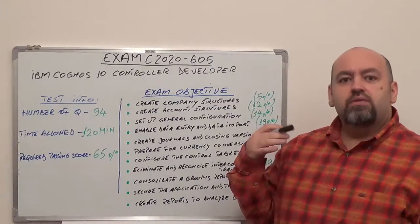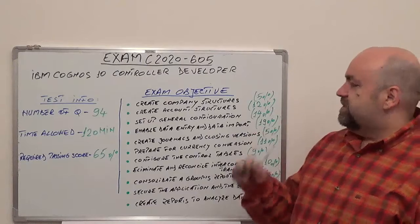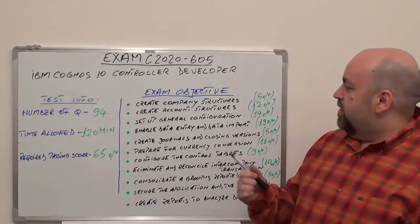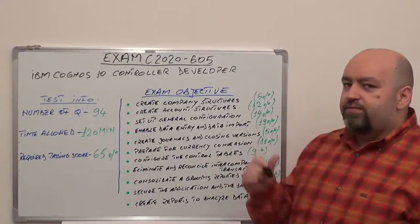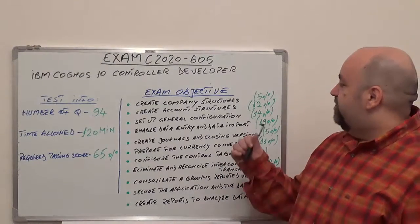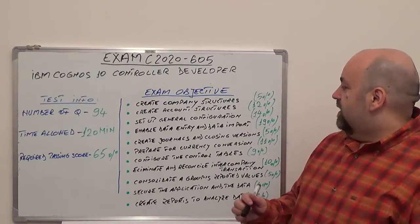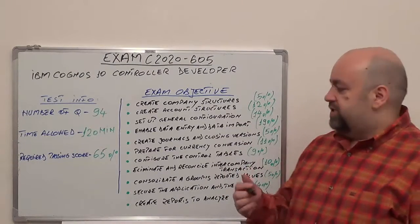First, let's start with the first one. Create company structure with 5% of total questions. Create account structure with 12% of the questions. Set up general configuration at 14% of total questions. Enable data entry and data import with 19% of the total questions.